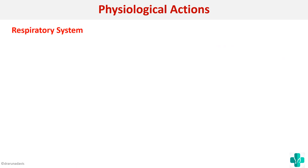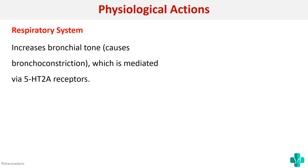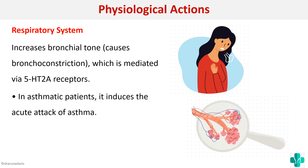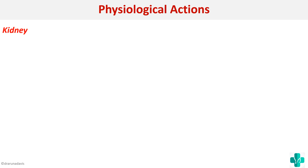On the respiratory system, serotonin increases bronchial tone, meaning it causes bronchoconstriction, which is not good for the lungs. In asthmatic patients, it can induce an acute attack of asthma. It also stimulates the rate of respiration, making those patients more dyspneic when serotonin levels are elevated.